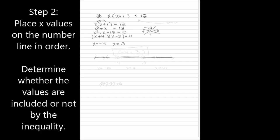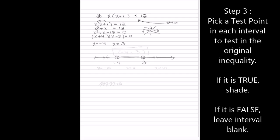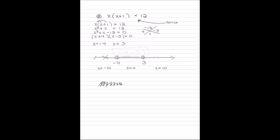Next step is to put these numbers on a number line in order: negative 4 first, then 3. This is a strict inequality with no equal to, so I have open circles at each number. I pick test points negative 10, 0, and 10. When I plug in negative 10, I get something that's not true, so I cross it out. When I test 0, I get something true, so I shade that area. When I test 10, it's not true. My solution is just the middle part: negative 4 to 3, both sides with parentheses.